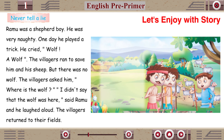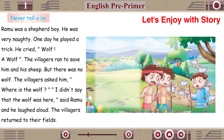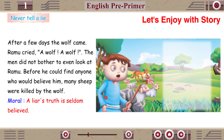Never Tell a Lie. Ramu was a shepherd boy. He was very naughty. One day he played a trick. He cried, 'Wolf! A wolf!' The villagers ran to save him and his sheep. But there was no wolf. The villagers asked, 'Where is the wolf?' Ramu said, 'I didn't say that the wolf was here,' and he laughed aloud. The villagers returned to their fields. After a few days, the wolf came. Ramu cried, 'A wolf! A wolf!' The men did not bother to look at Ramu. Before he could find anyone who would believe him, many sheep were killed by the wolf. Moral: A liar's truth is seldom believed.